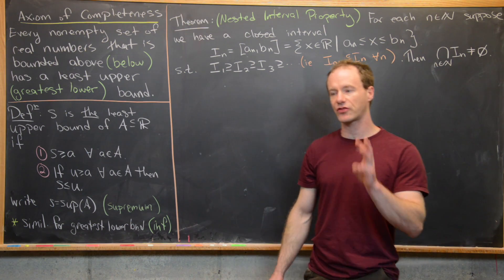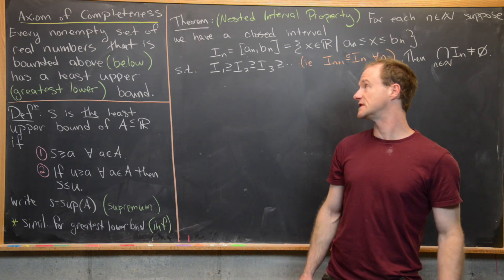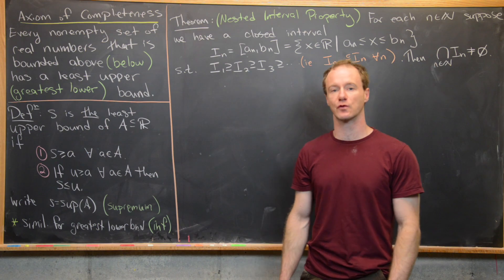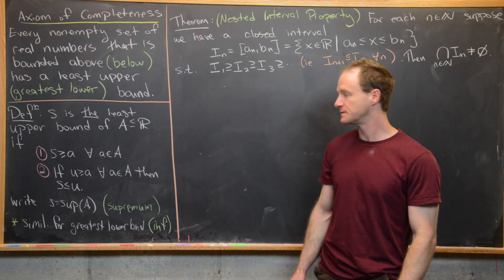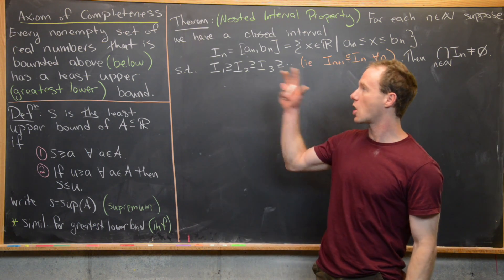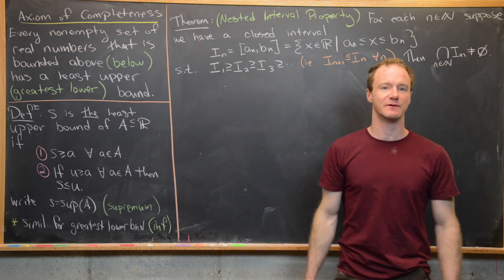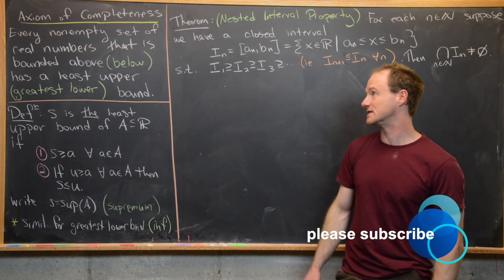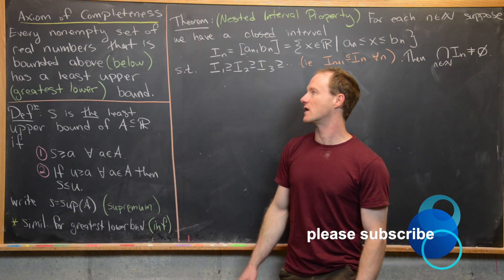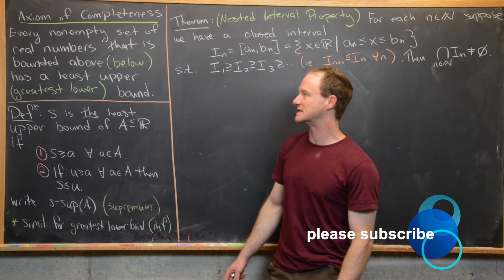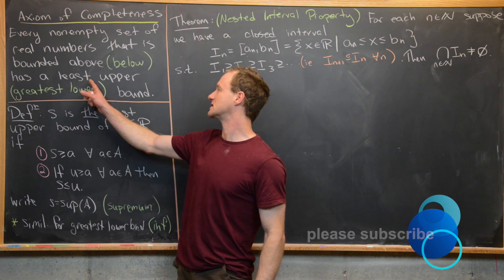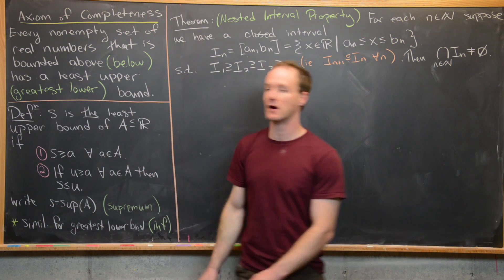In this video we're going to look at three consequences of the axiom of completeness of the real numbers. Before we do that, I want to recall what the axiom of completeness is. It says that every non-empty set of real numbers that is bounded above has a least upper bound.